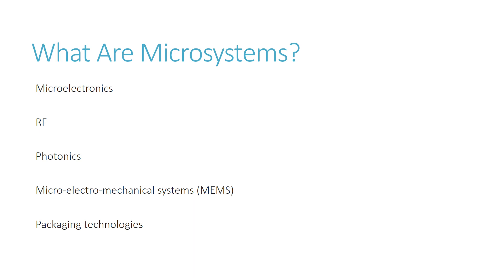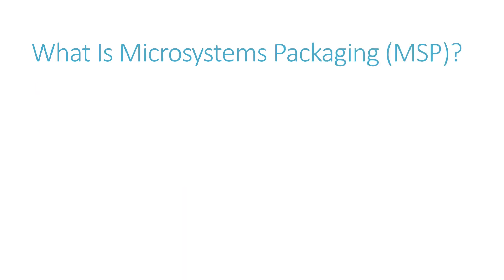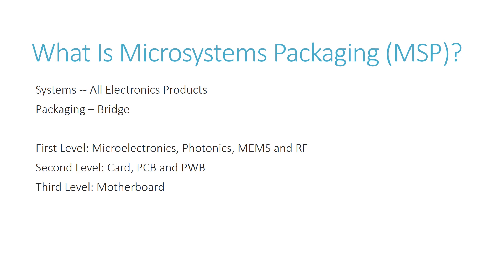The recent wave, which is packaging technology, consists of system packaging that integrates all these components into products together. The systems refer to all electronic products. Packaging is defined as a bridge that can interconnect the ICs and other components into a system-level board to form electronic products.